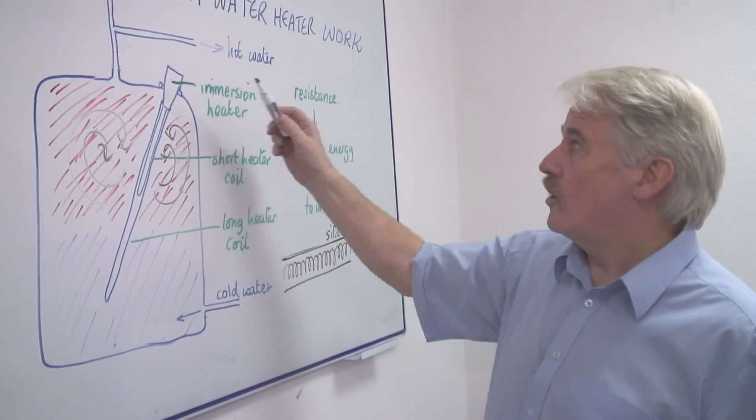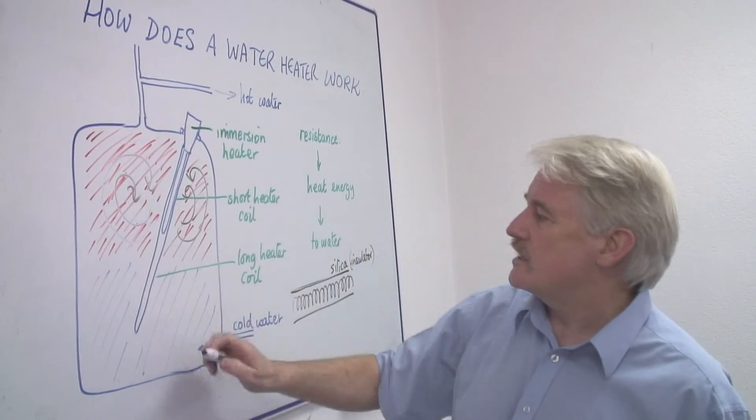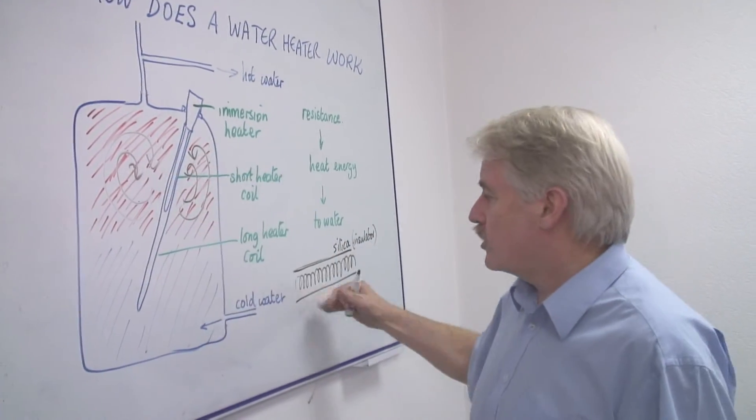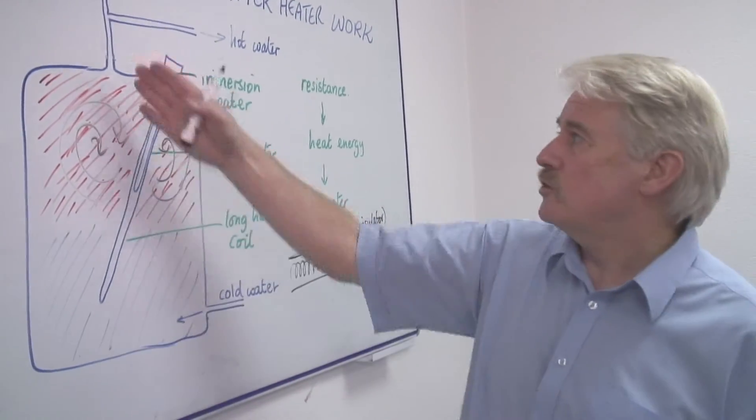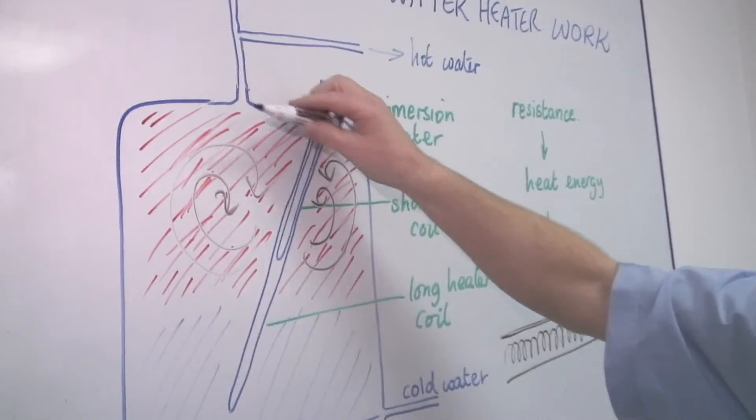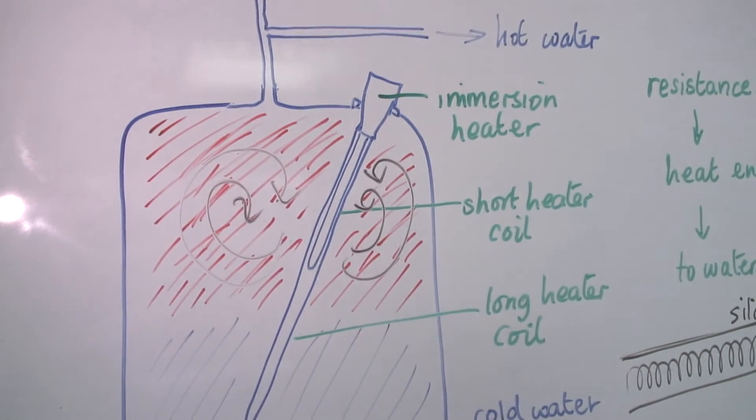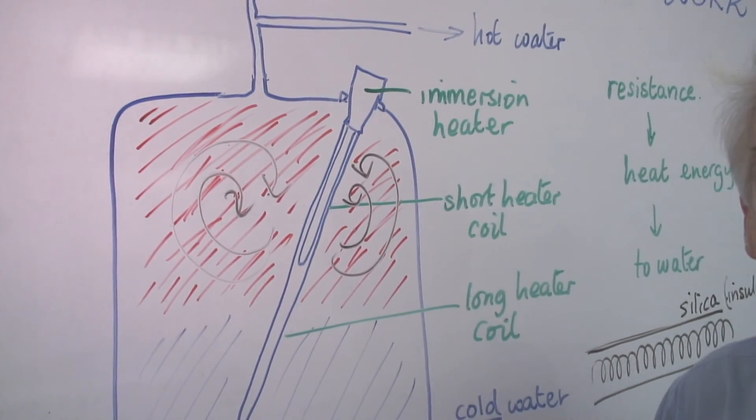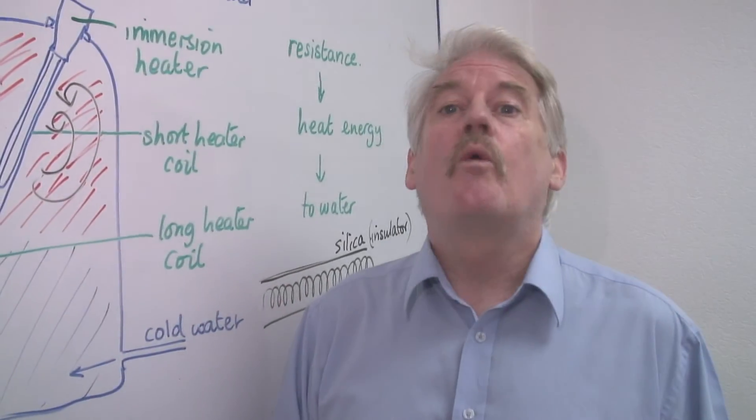When you want to take hot water off, you simply open the tap and the water is pushed out by the cold water coming in at the bottom. This automatically pushes the hot water out at the top and the water will remain hot until it is all used. Then of course you put the heater on and it will work again. So that is basically how a water heater system works.